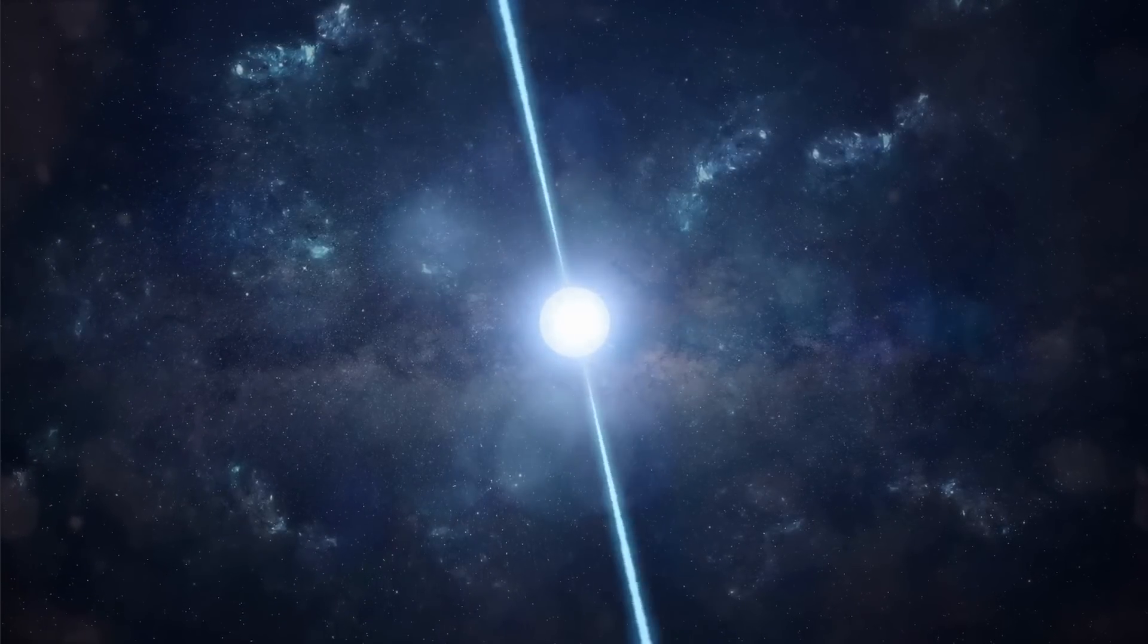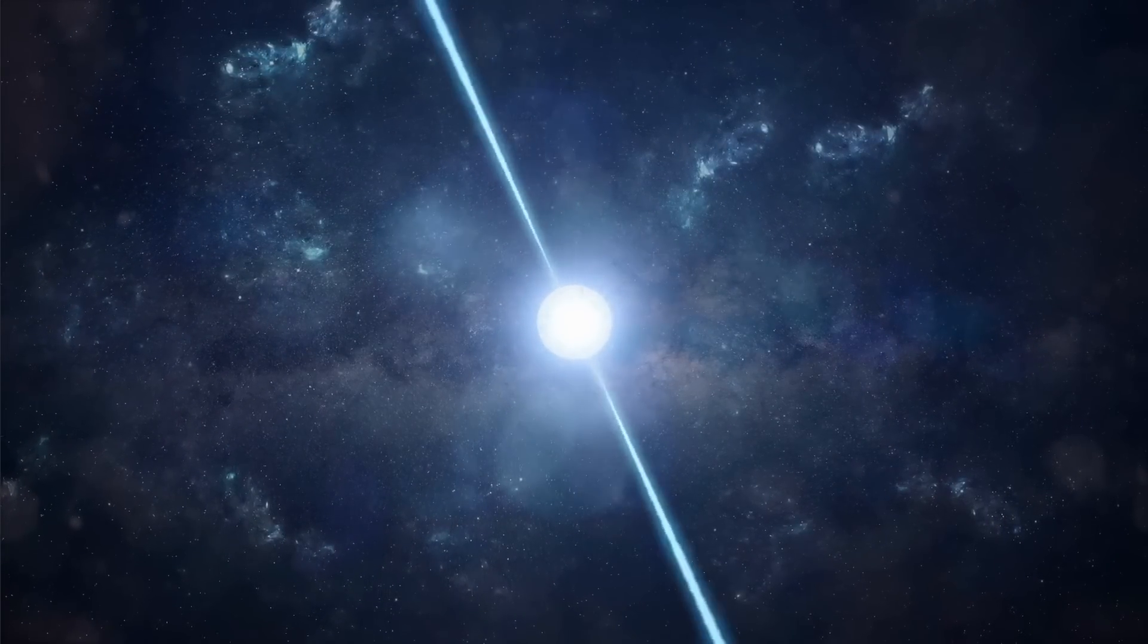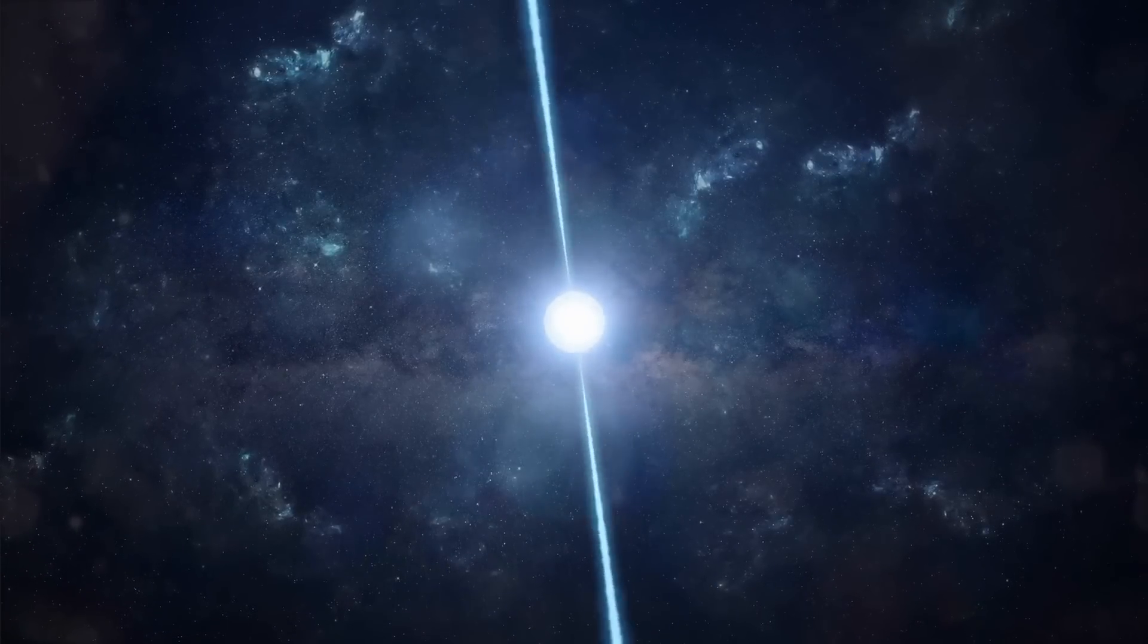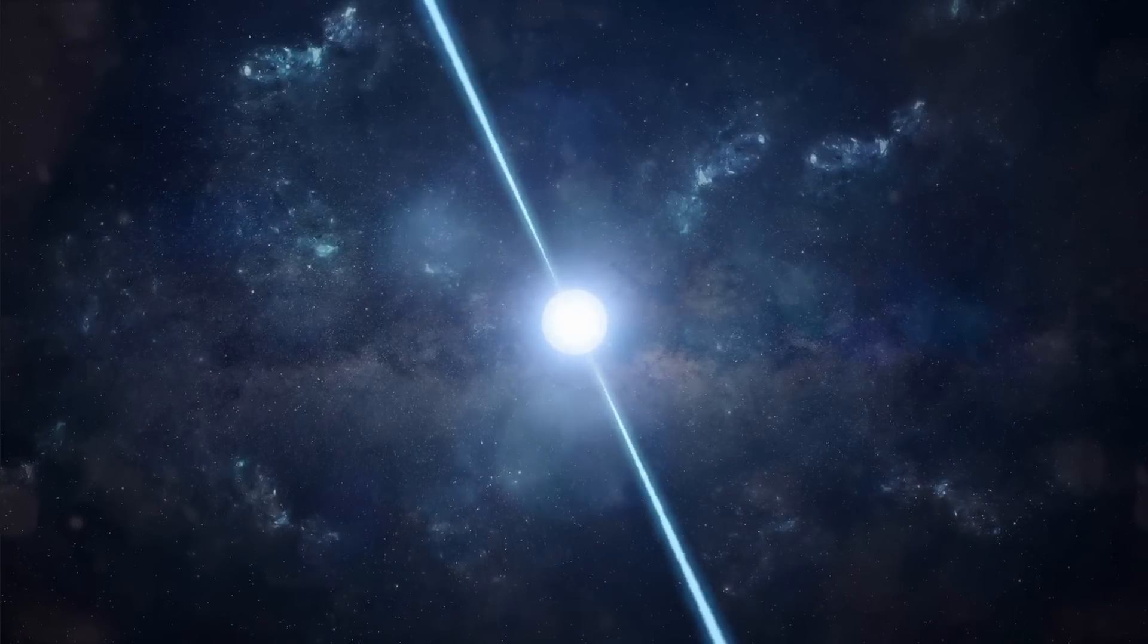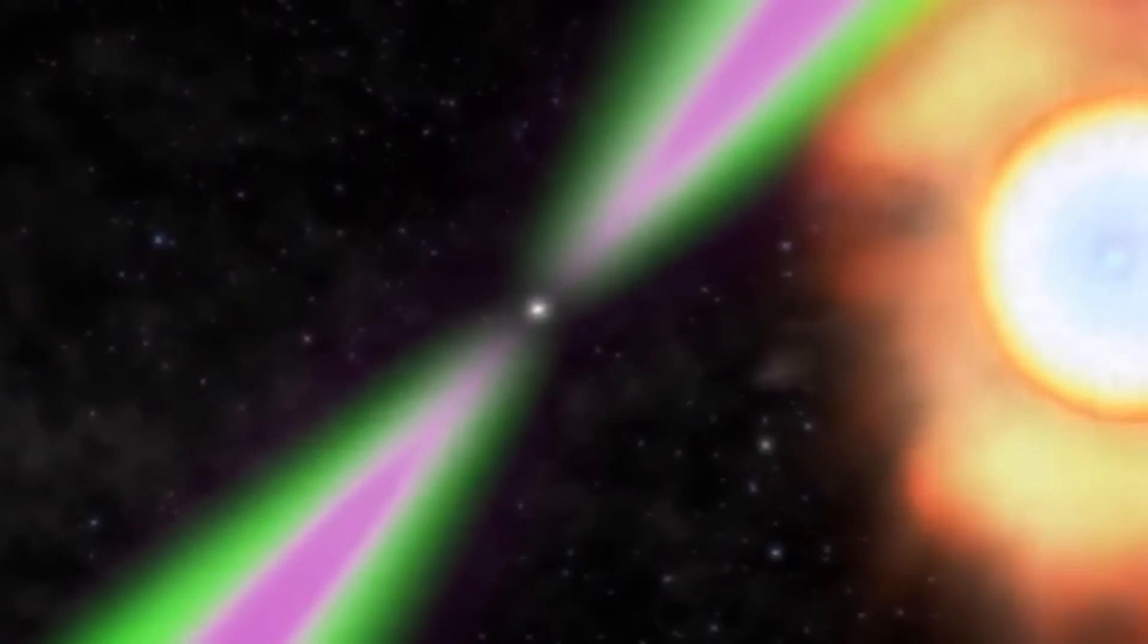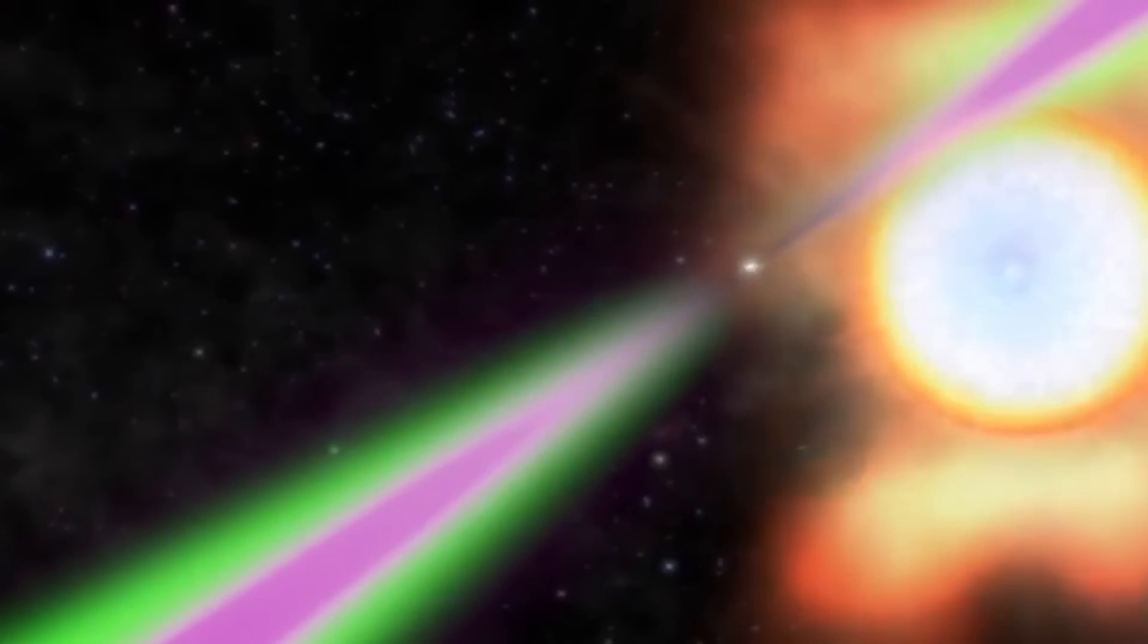And so normally young pulsars with a lot of emissions appear in isolation, they appear completely by themselves. But more than half of millisecond pulsars that are not young, usually have some kind of a stellar partner.